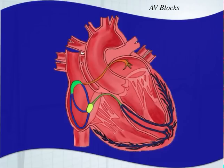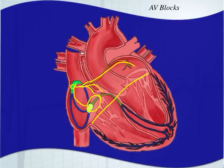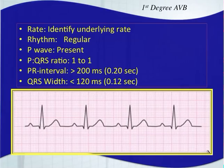AV stands for atrioventricular — there's a block in the conduction between the atria and the ventricles. Typically, the AV block will occur around the AV node, just like a junctional rhythm. With an AV block, you will have a block in this conduction pathway in that same area, but you could still have a sinus rhythm depolarizing from the sinoatrial node, just getting delayed or interrupted at that block.